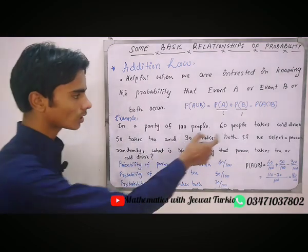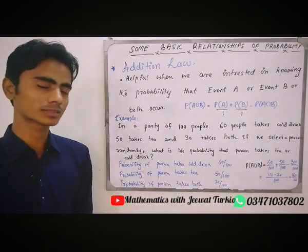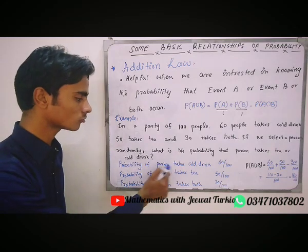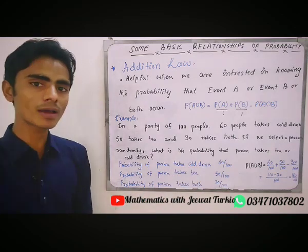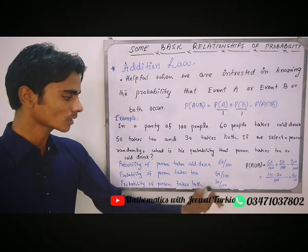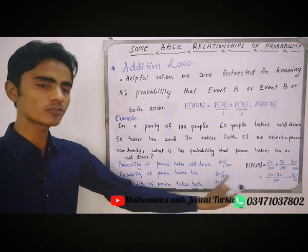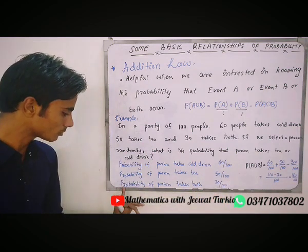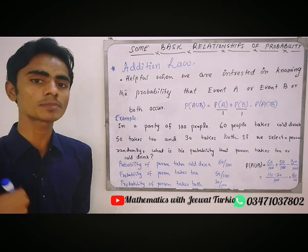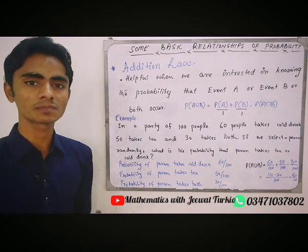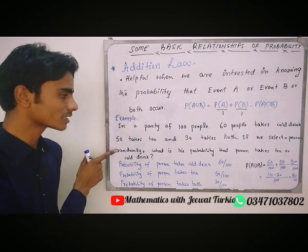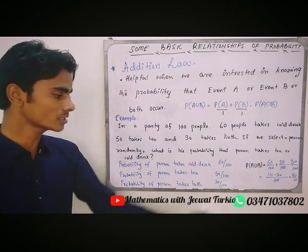The probability that a person texts cold ring: that is 60 people, so probability is 60 by 100. The probability that a person texts T: that is 50 people, so that is 50 by 100. The probability that a person texts both T as well as cold ring: that is 30 people, so that is 30 by 100.